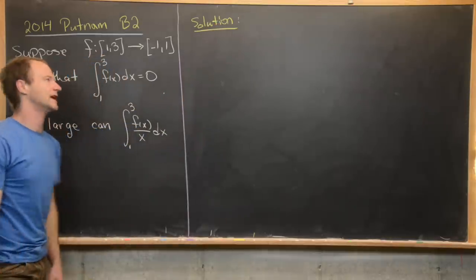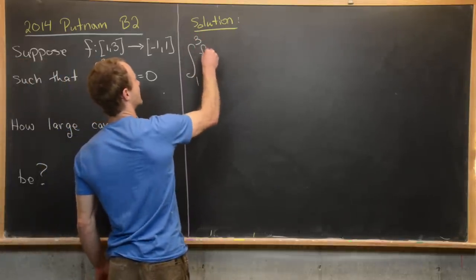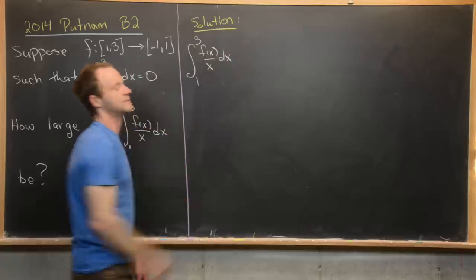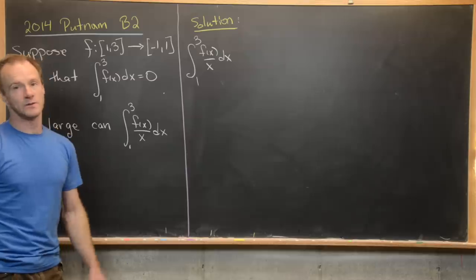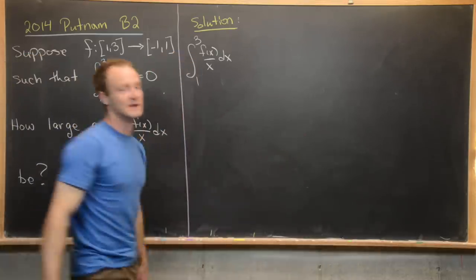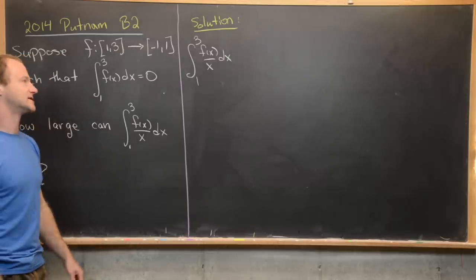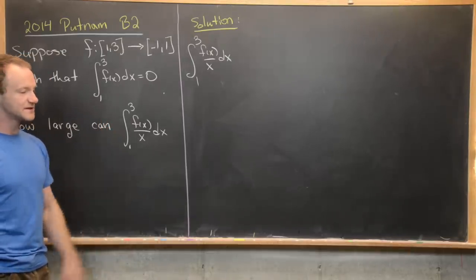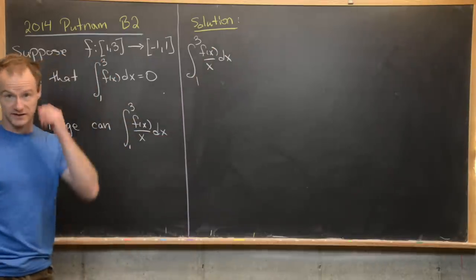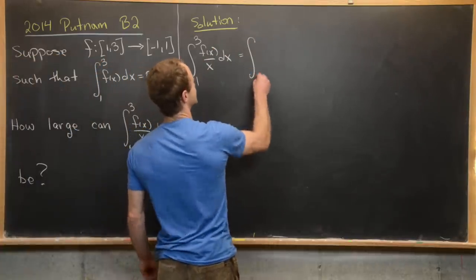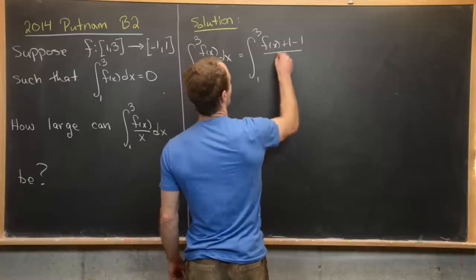Now we're ready to look for a solution. Starting with our goal expression — the integral from 1 to 3 of f(x)/x dx — we want to manipulate this so we can place an upper bound on it. The first thing I want to do is add 0 by adding 1 and subtracting 1 in the numerator, giving us the integral from 1 to 3 of (f(x) + 1 - 1)/x dx.